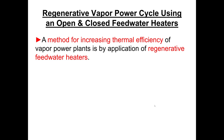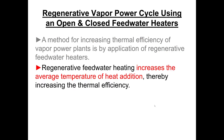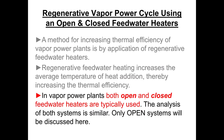Let's start with the regenerative vapor power cycles. Regenerative heating is basically a method to reduce the amount of heat required in a steam generator in order to increase its efficiency. There are two methods for doing this: open and closed feed water systems, which are heat exchangers.